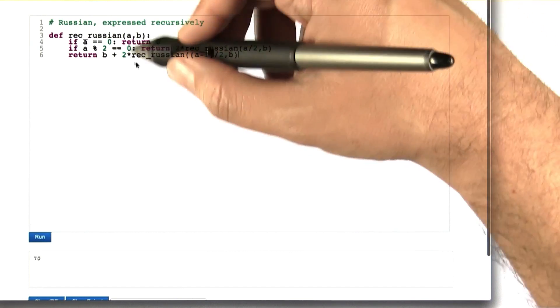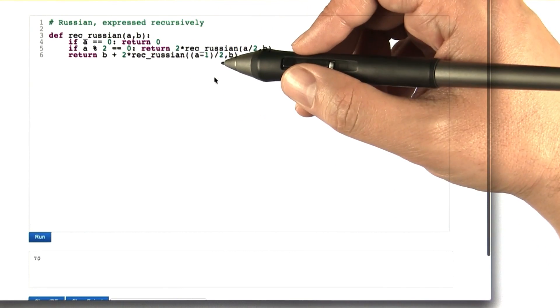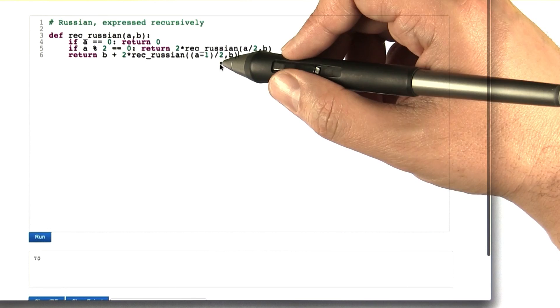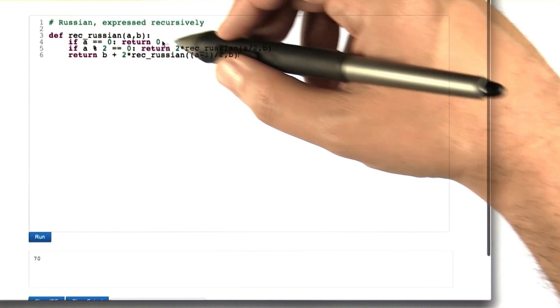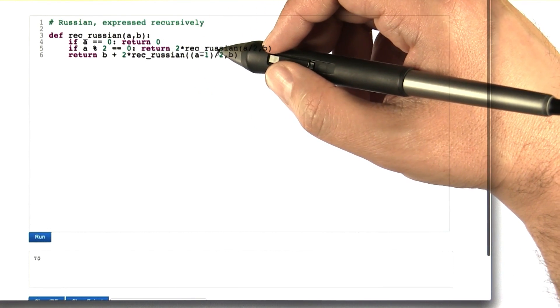Let's actually analyze this algorithm. It's going to be the same answer as what we got for the Russian peasant's algorithm, but it's going to introduce a new tool that's going to be helpful for us analyzing lots of other algorithms.